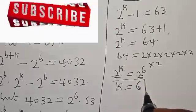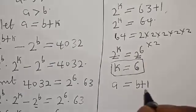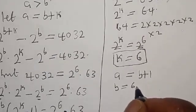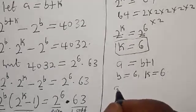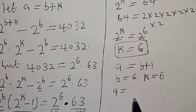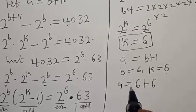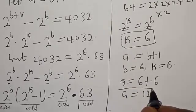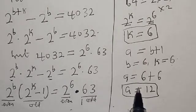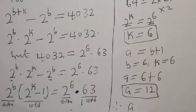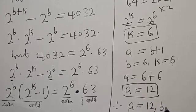We've gotten the value of k to be 6. Now we know that a equals b plus k, where b equals 6 and k equals 6. Therefore a is equal to 6 plus 6, which gives us a equal to 12. The equation asks us to find the value of a and b where a and b are positive integers. Therefore our final answer is a equal to 12 while b equal to 6.